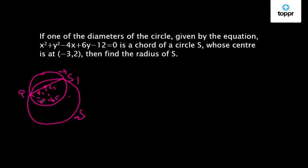So to find R, we also need to know the distance between C1 and C so that we can apply the Pythagoras theorem to find out the radius R. So let us say the distance C1C is D.